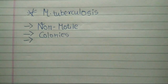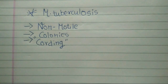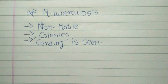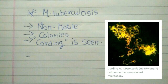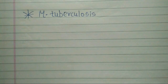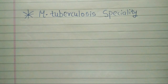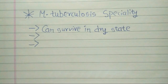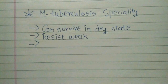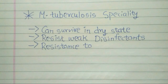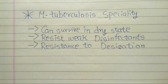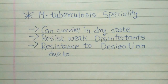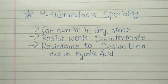Due to the presence of fatty acids on their cell wall, they are seen as wrapped together, which is known as cording, like cording of threads to make a rope. They can survive in a dry state for weeks and can resist weak disinfectants. Their cell wall is rich in lipids such as mycolic acid, which is likely responsible for their resistance to desiccation and is a key virulence factor.